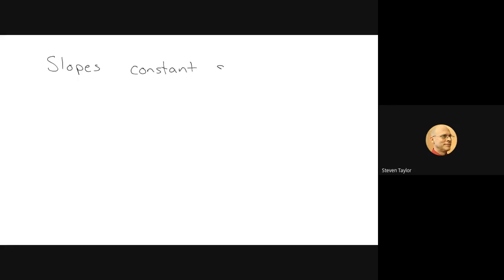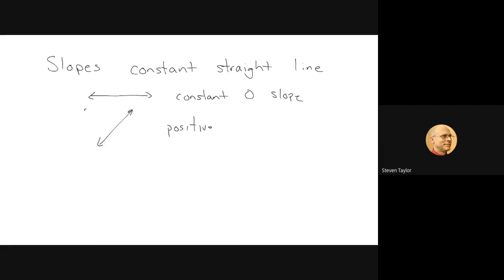To answer the types of questions on the picture, a couple things to go over about slopes. A slope is constant if you have a straight line. The first one here would have a constant zero slope, here we'd have a positive constant slope, and then we'd have an example of a negative constant slope.